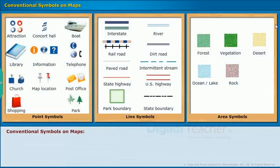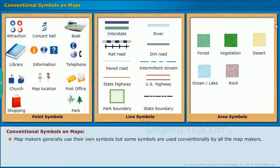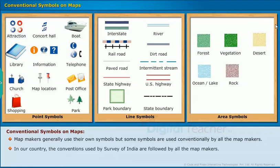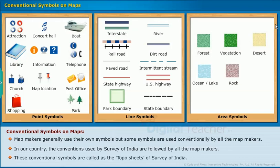Now let us look at the different conventional symbols used on maps. Map makers generally use their own symbols, but some symbols are used conventionally by all map makers. In our country, the conventions used by Survey of India are followed by all map makers. These conventional symbols are called the topo sheets of Survey of India.